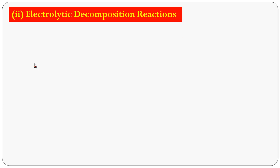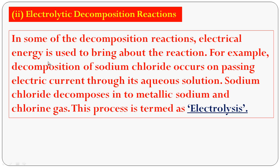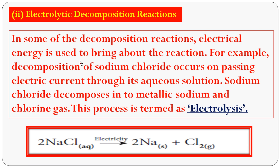The second type is electrolytic decomposition. In some decomposition reactions, electrical energy is used to bring about the reaction. For example, decomposition of sodium chloride (NaCl) occurs on passing electric current through its aqueous solution. When electrical energy is supplied, sodium chloride decomposes into sodium and chlorine gas. This process is called electrolysis. Balancing: 2 NaCl → 2 Na + Cl₂. Sodium is white in color and chlorine is a pale yellow-green colored gas.